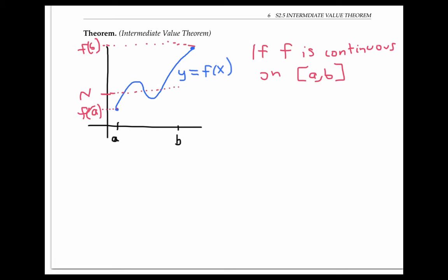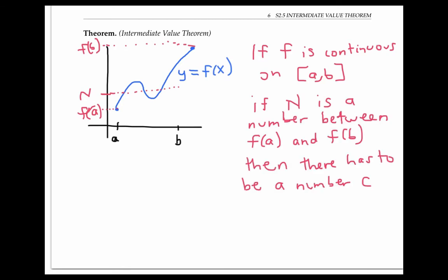In other words, if n is a number between f(a) and f(b), then there has to be a number c in the interval [a,b] such that f(c) equals n.